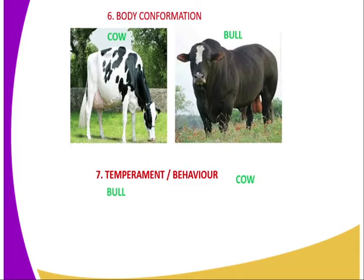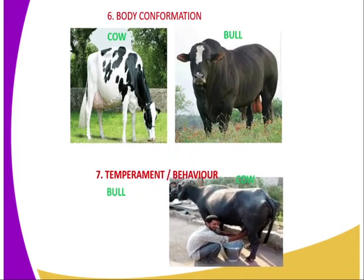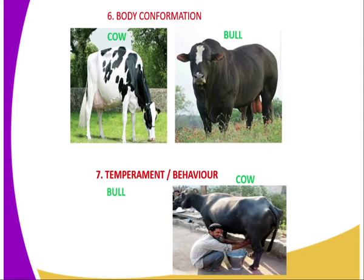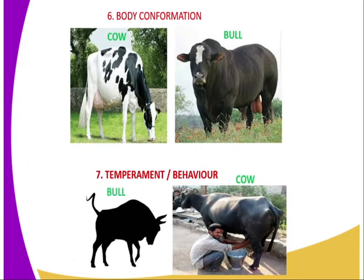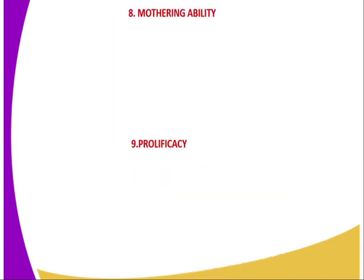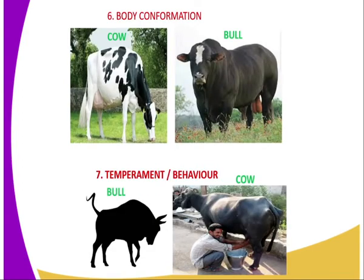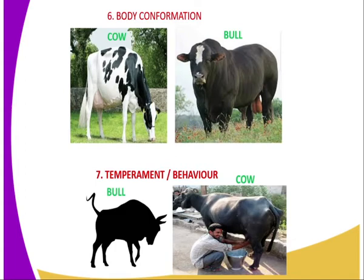Seventh is temperament — that is the behavioral disposition of the animal. The animal selected should not be aggressive, should not fight people or other animals in the herd. They should be of good behavior; they should be docile and calm.